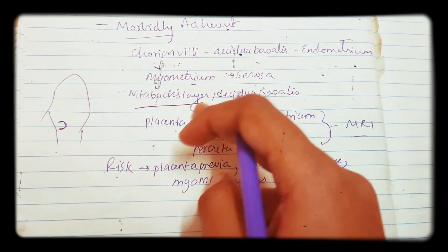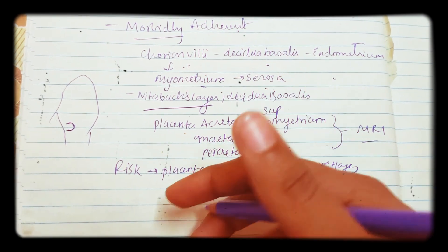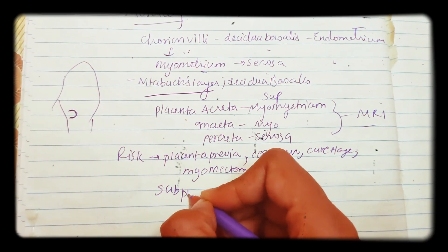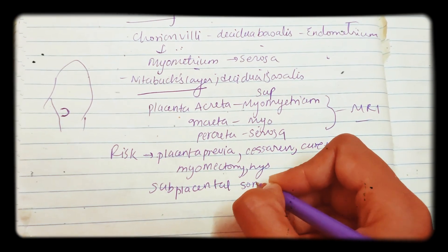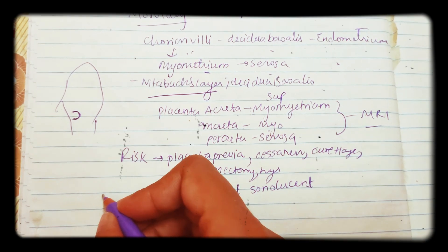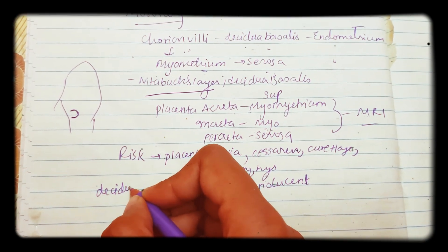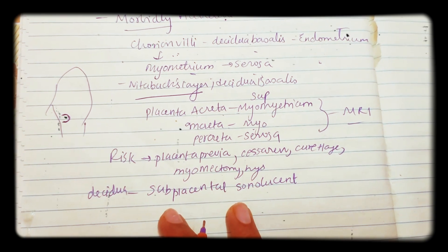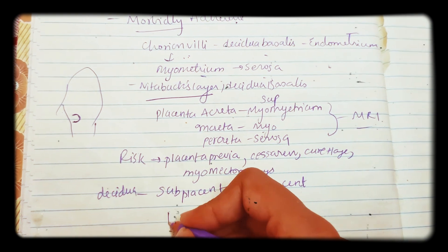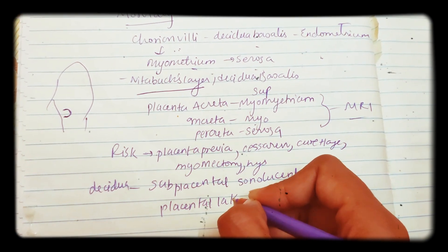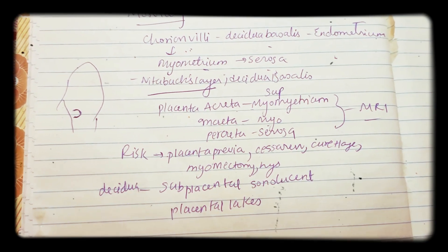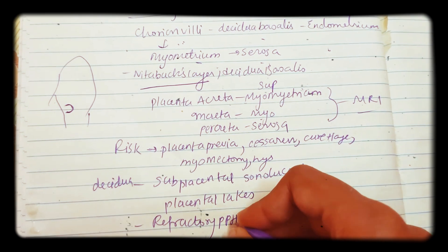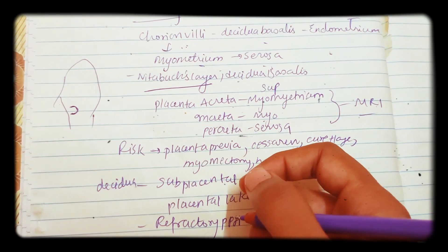Now coming to diagnosis. MRI is the gold standard to assess all of this. Findings on MRI include: absence of the sub-placental sonolucent area — which represents the decidua basalis — if this layer is absent on MRI you can diagnose the condition. Also seen are heterogeneous appearance of the placenta and placental lakes. These findings confirm the diagnosis, leading to refractory postpartum hemorrhage and failure of placental separation.